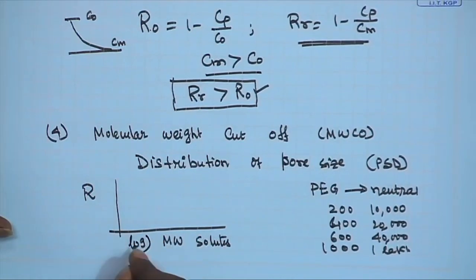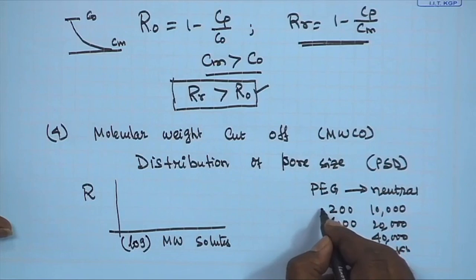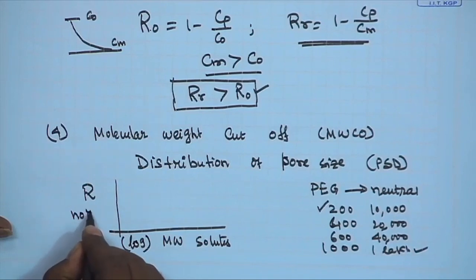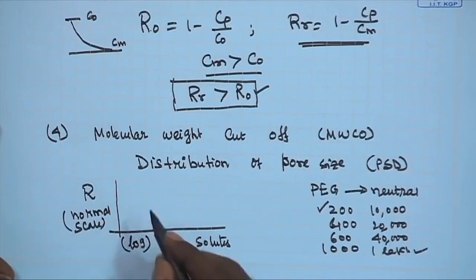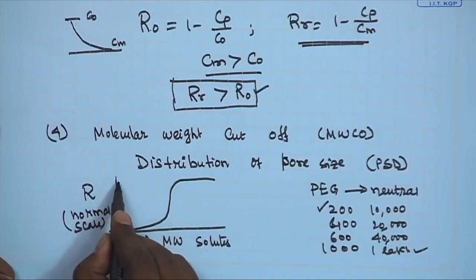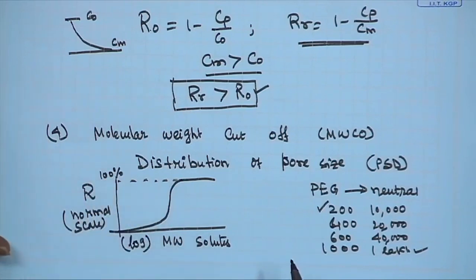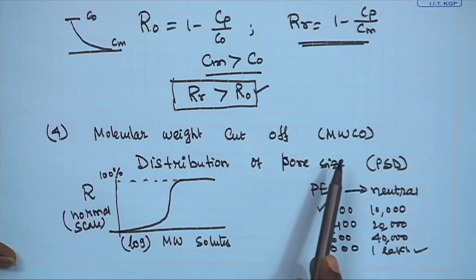This is basically a semilog scale — the molecular weight axis is on a log scale because you are covering a wide range of molecular weights from 200 to 1 lakh, while retention is on a normal scale. If you do that, you will get an S-shaped curve, where R reaches 100 percent. Once you generate this retention versus molecular weight curve for a particular membrane, you are coming close to the concept of molecular weight cut-off.